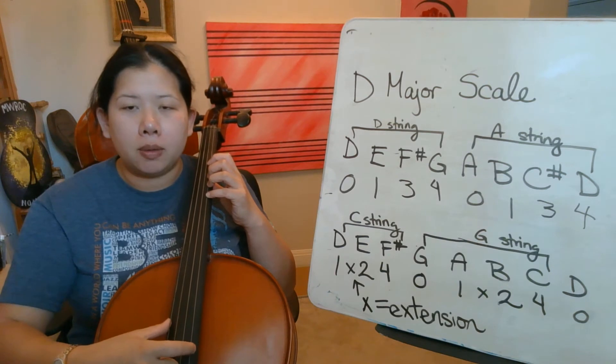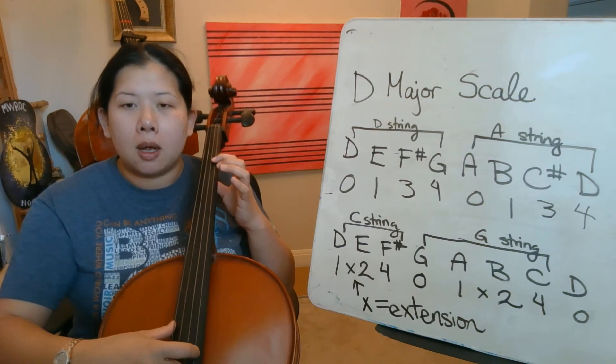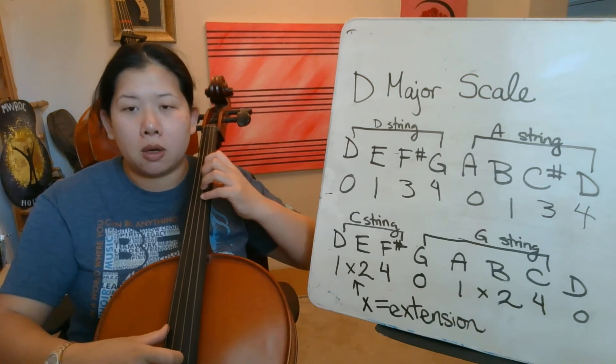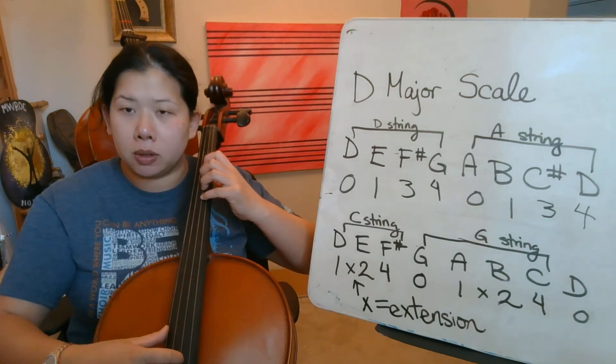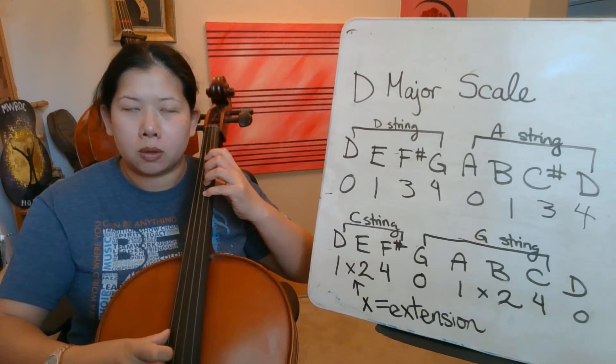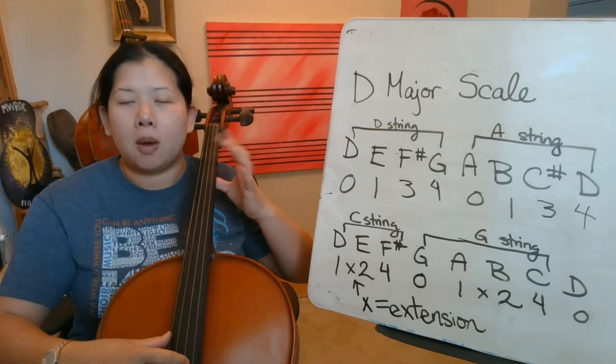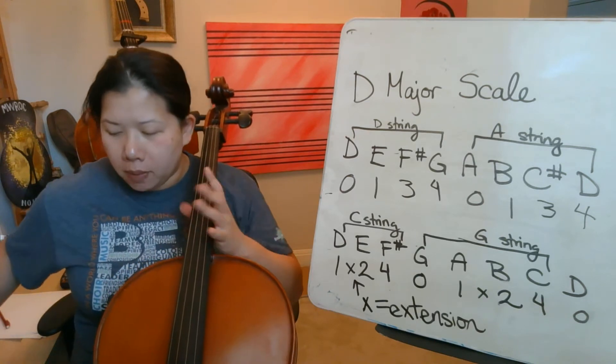D, fourth finger, blue. C sharp, red. B, yellow. Open A. Alright, grab your bow.